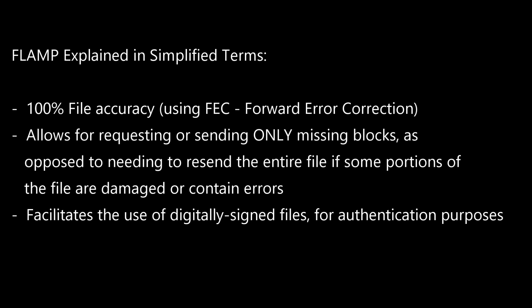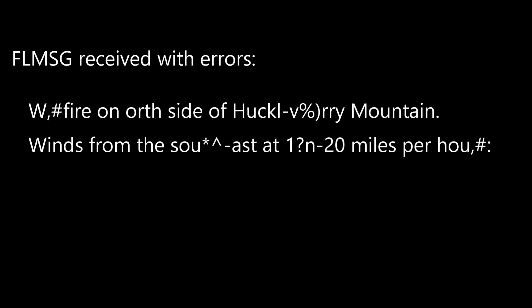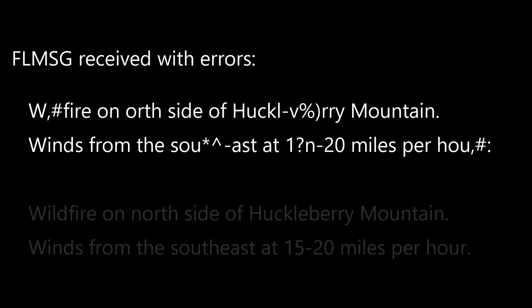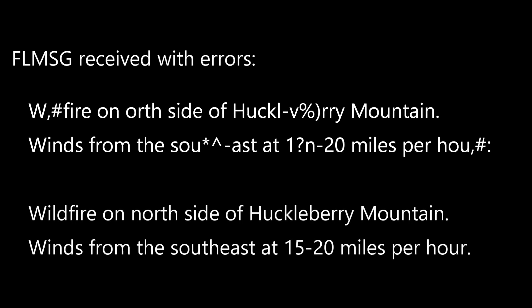100% accuracy may not always be necessary for all radio traffic. For example, if you received an FLMessage document with errors, you can still often get the meaning of the original message — such as 'wildfire on north side of Huckleberry Mountain, winds from the southeast 15 to 20 miles per hour.' Even with a garbled message containing several errors, you can still get the meaning of the original message.